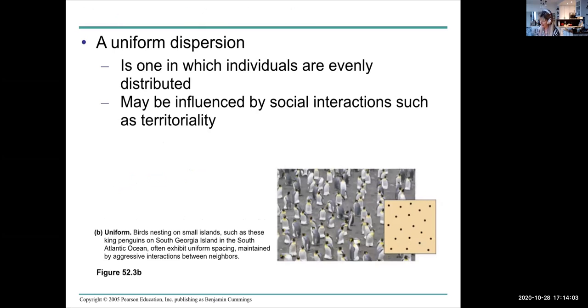A uniform dispersion is where individuals are very evenly distributed. Sometimes that's influenced by social interactions like territoriality. This diagram here shows penguins. They're defending a very small territory where they're laying eggs and have young, but they defend it against all the others. So they are more uniformly distributed and would be more predictable to find.